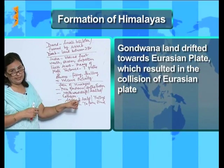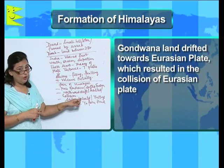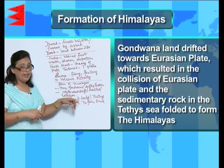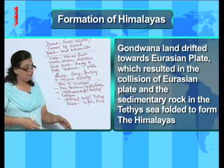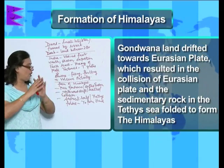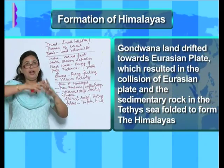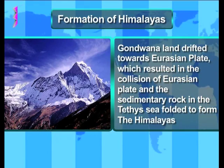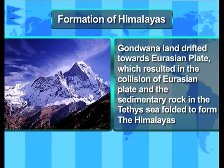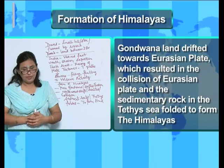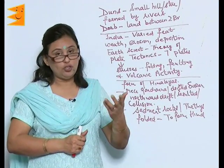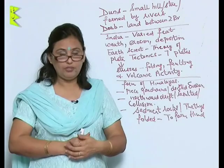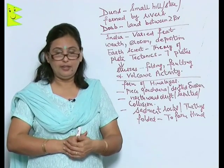When this collision took place, there was a sea called Tethys, under which there were sedimentary rocks. These sedimentary rocks folded and the Himalayas were formed. This is how the formation of the Himalayas happened. More interesting facts about the physical features of India will continue in the next clipping.